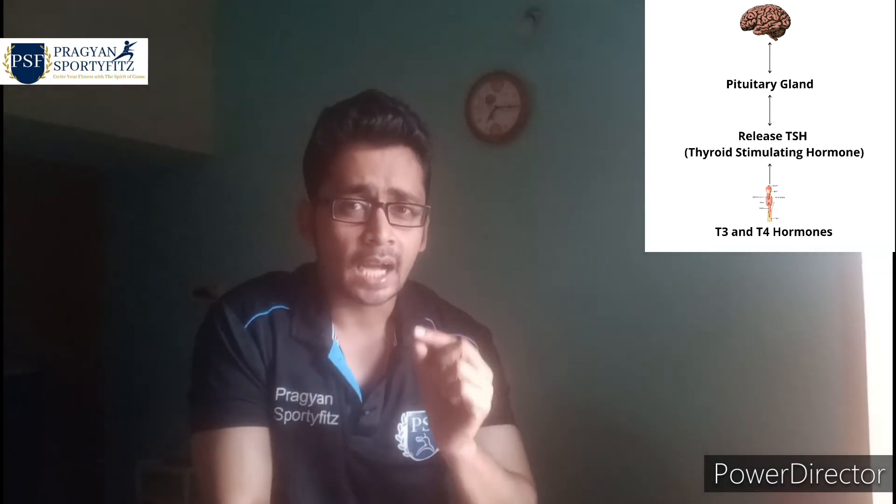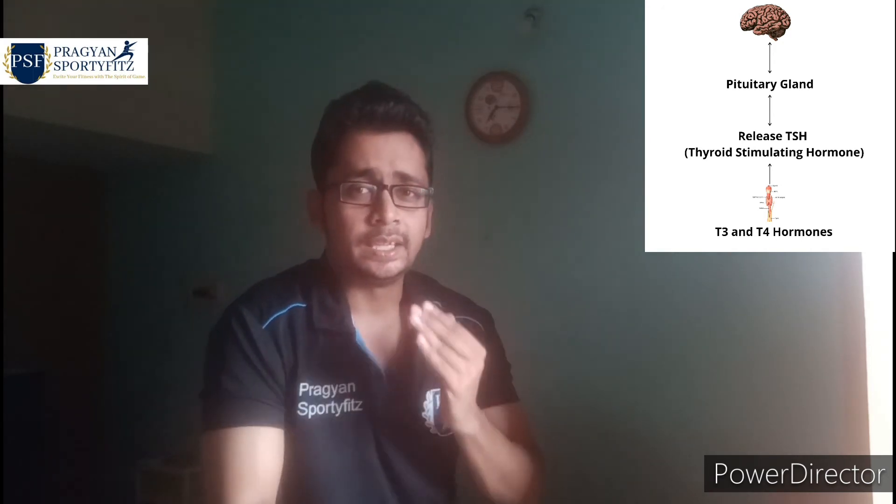How does the thyroid gland work? In our brain, the pituitary gland releases TSH — thyroid stimulating hormone — which sends a signal to the thyroid gland to release T3 and T4. If our body needs more T3 and T4, the pituitary gland releases more TSH. If less is needed, it controls TSH output accordingly.